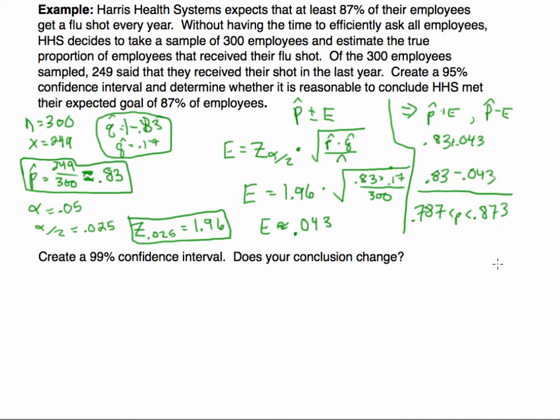Now we want to create a 99% confidence interval and determine whether our conclusion changes. Based on this approach, if our confidence level has increased from 95 to 99, think about what's going to happen to our margin of error. If we wanted to be more confident, is our margin of error going to increase or decrease? You should be able to answer this question even without calculating. You would think that our conclusion will stay the same. The reason why is we can expect our margin of error to increase.